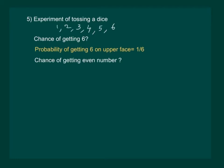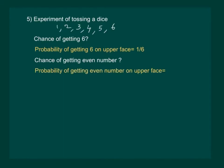Now, suppose for the same experiment we want to find out the chance of getting an even number. How will we find the probability? We know that out of the 6 possible outcomes, there are 3 possibilities of getting even numbers — that is, if we get 2, 4, or 6. So out of 6, three numbers satisfy our condition. The probability of getting an even number on the upper face is 3 out of 6, which is the same as 1 by 2.